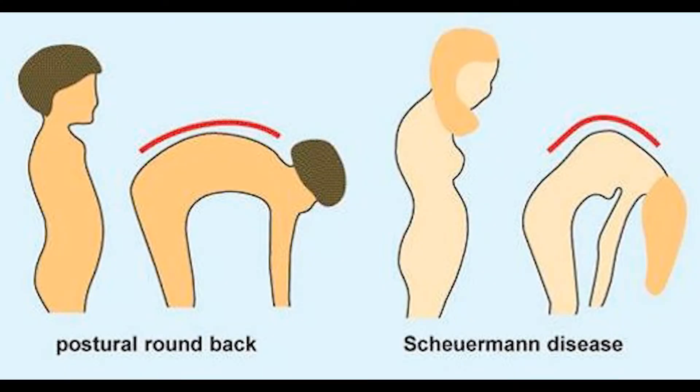Kyphosis refers to an abnormal curvature of the spine when viewed from the side. It causes a round back deformity. There are two types of kyphosis: there is a postural form, and then there's a more structural form, which is called Scheuermann's kyphosis.